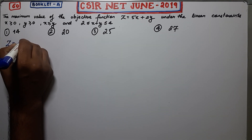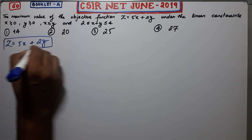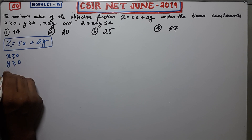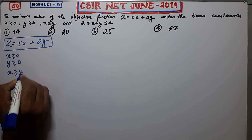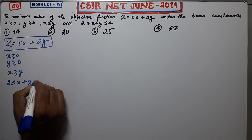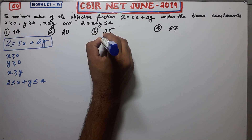First, I will write the objective function right here. The constraints are: X should be greater than 0, Y should be greater than 0, X should be greater than Y, and 2 should be less than or equal to X plus Y, which should be less than or equal to 4. These are your constraints.